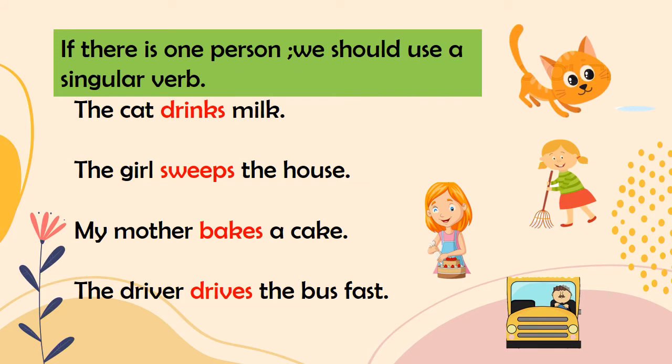When we use present tense verbs, we should be careful. If there is one person, one animal, or one thing, we use a singular verb. A singular verb always ends with the letter 'S.' For example: 'The cat drinks milk.' The cat is singular, so we add 'S' to drink — it becomes drinks. 'The girl sweeps the house.' Girl is singular, so sweep becomes sweeps.